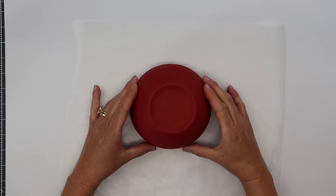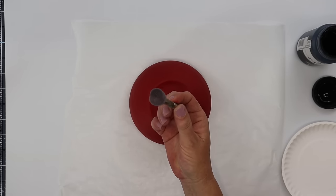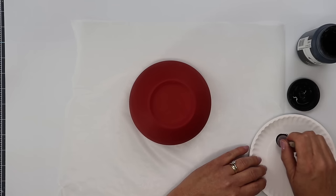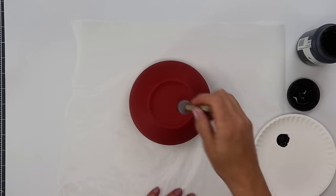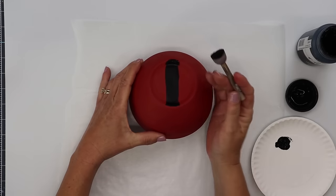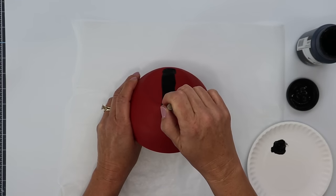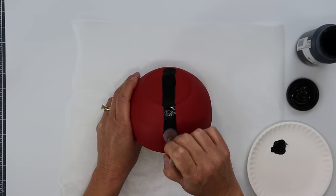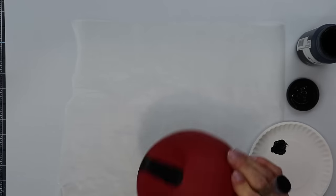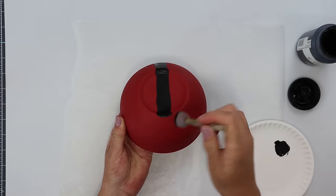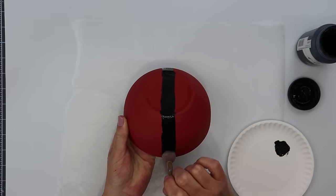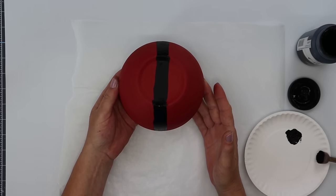Once that dries we're going to take one of Dollar Tree's small sponge brushes, dab that into some black chalk paint and make sure that we have it evenly spread across the sponge. We're going to draw a line in the center of the bottom of our bowl. Then we'll bring that line down on one side, turn it around and bring the line down again on the opposite side. So you'll have one continuous line that runs from one side of the bottom of the bowl to the other side.